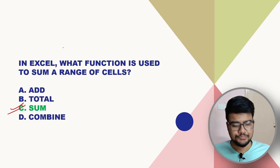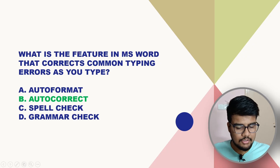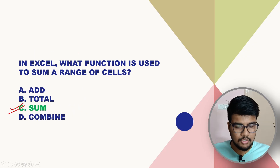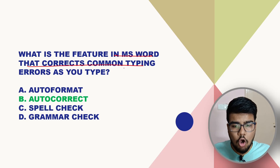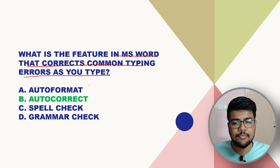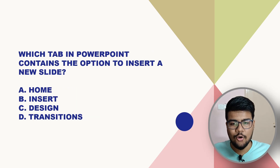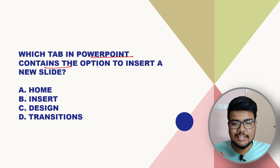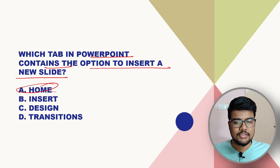What is the feature in MS Word that corrects common typing errors as you type? The answer is AutoCorrect — it is straightforward, that is why it is shown quickly.